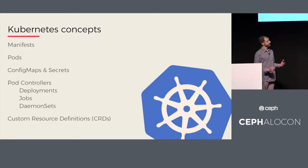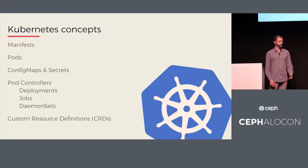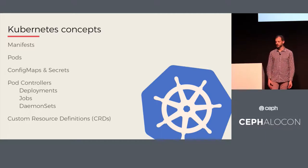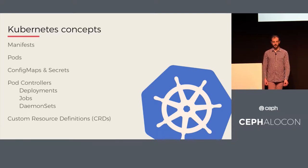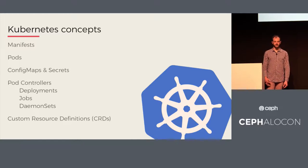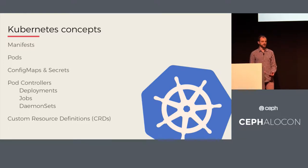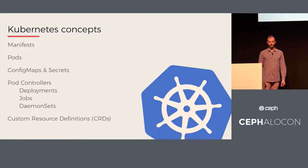Briefly, some high-level Kubernetes concepts. We have manifests, which are definitions that I would write in YAML to define what a resource looks like in Kubernetes. Rook will define these using Golang structures and use the Kubernetes API directly. There are also pods, which are our unit of work in Kubernetes, consisting of one or more containers running sequentially or side by side. We also have config maps and secrets, which store small bits of data persistently for configuration.